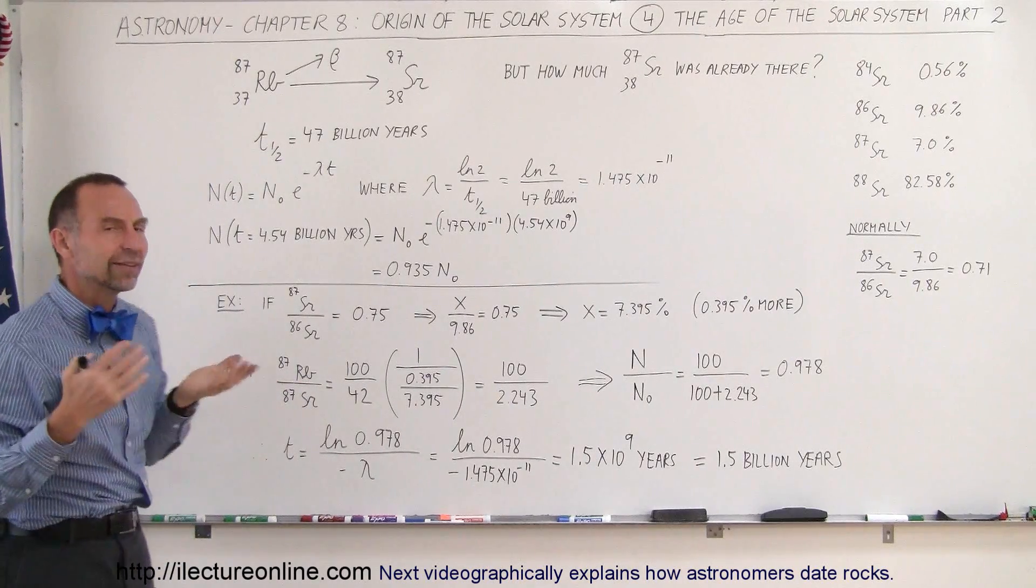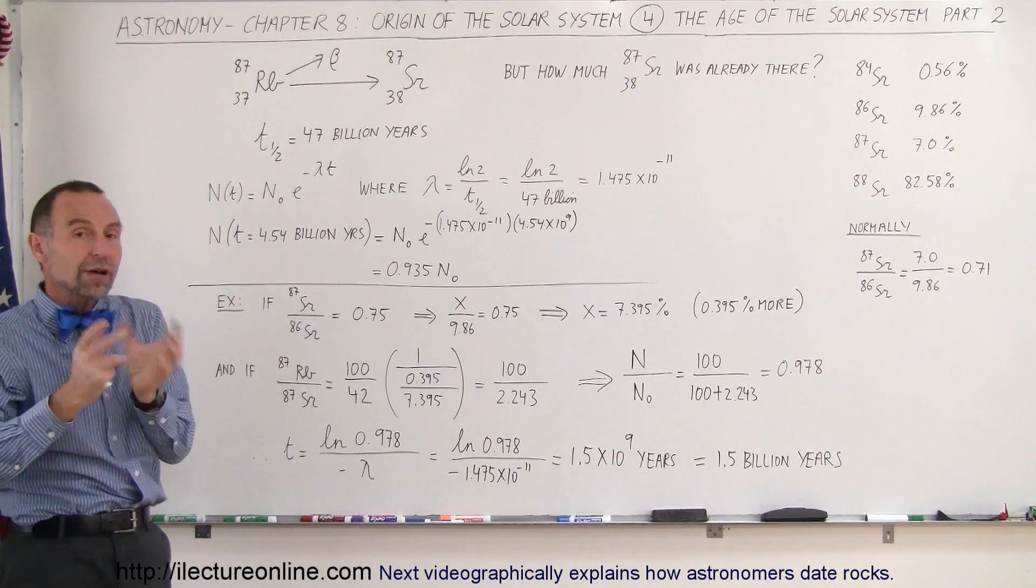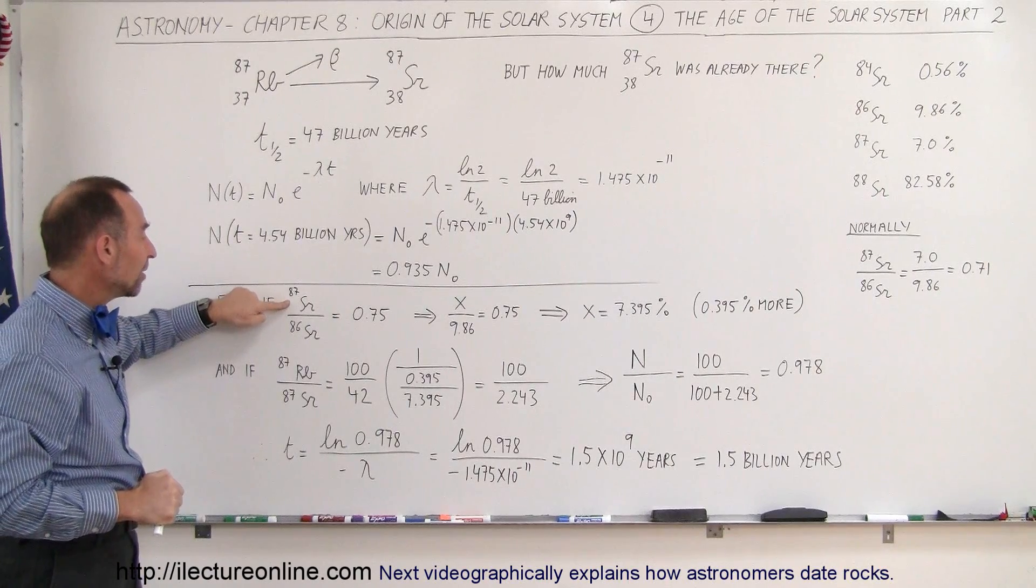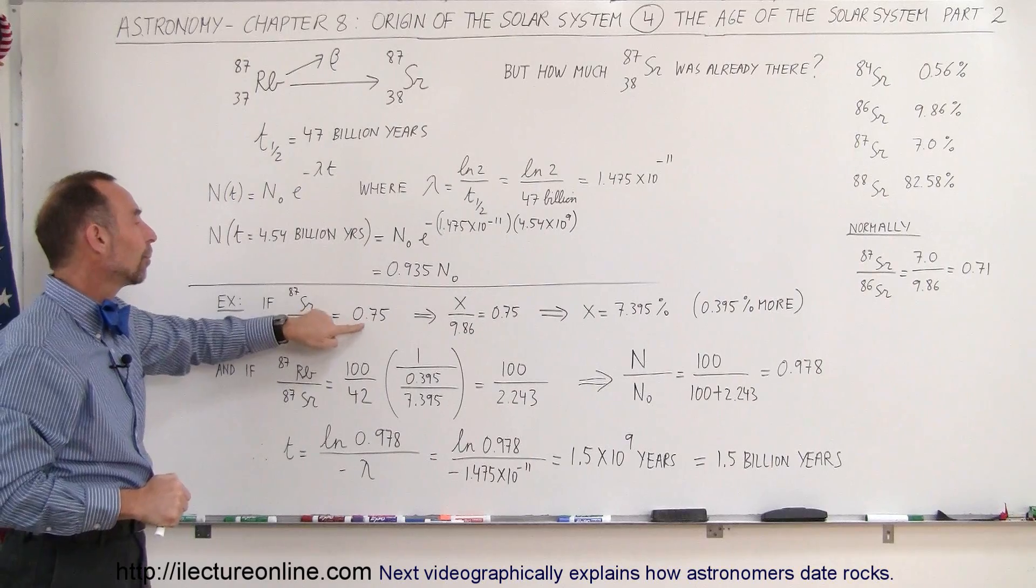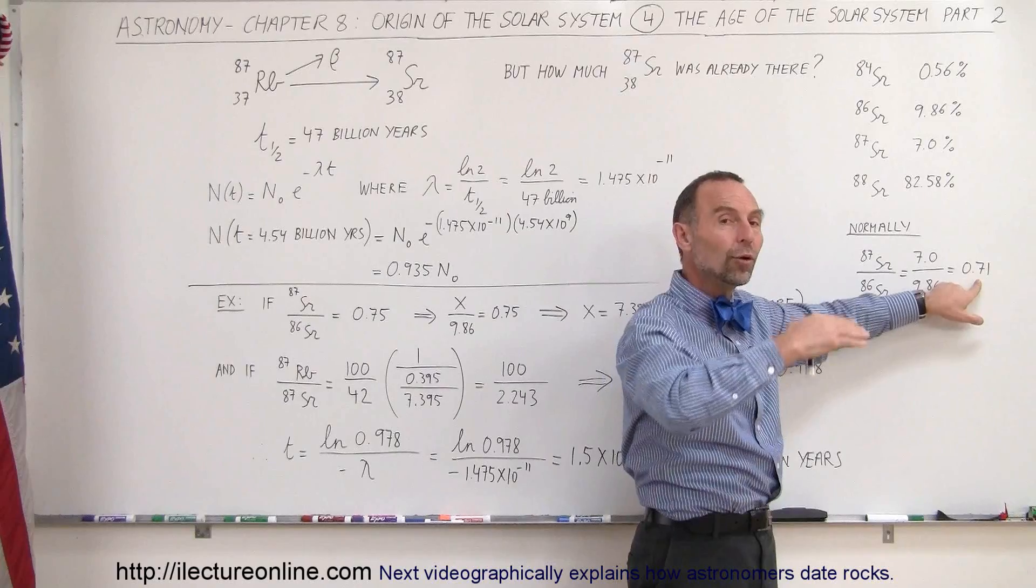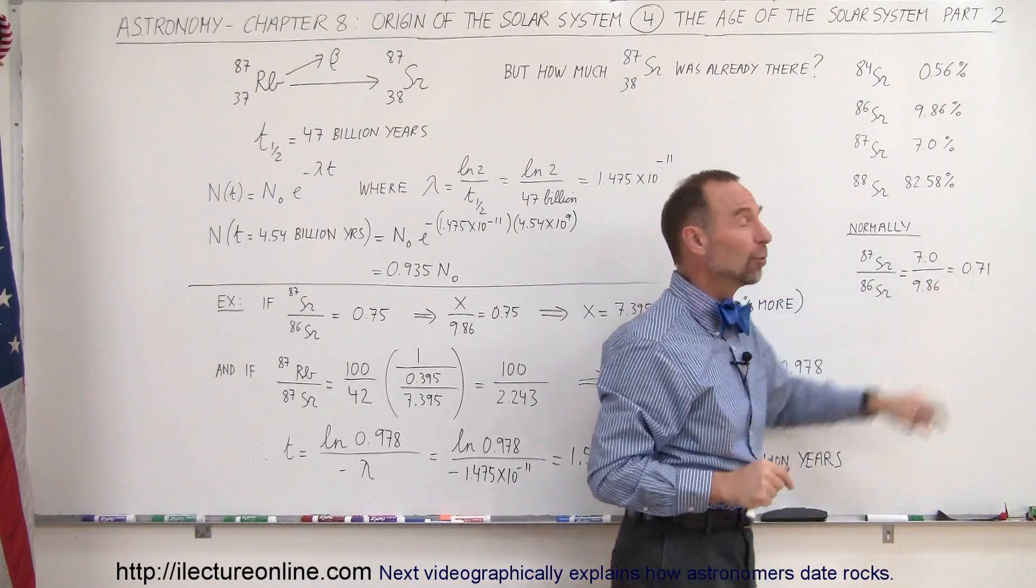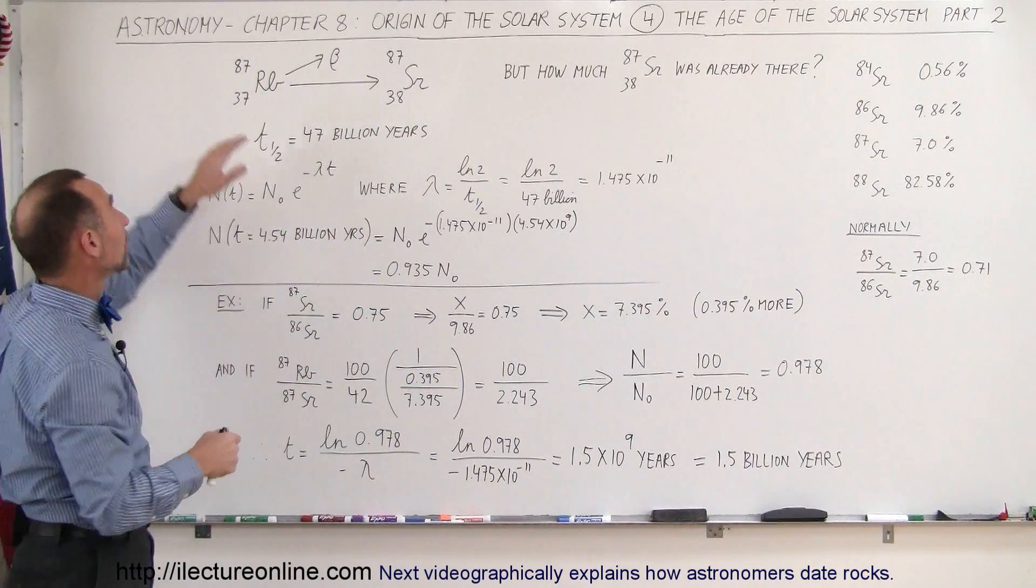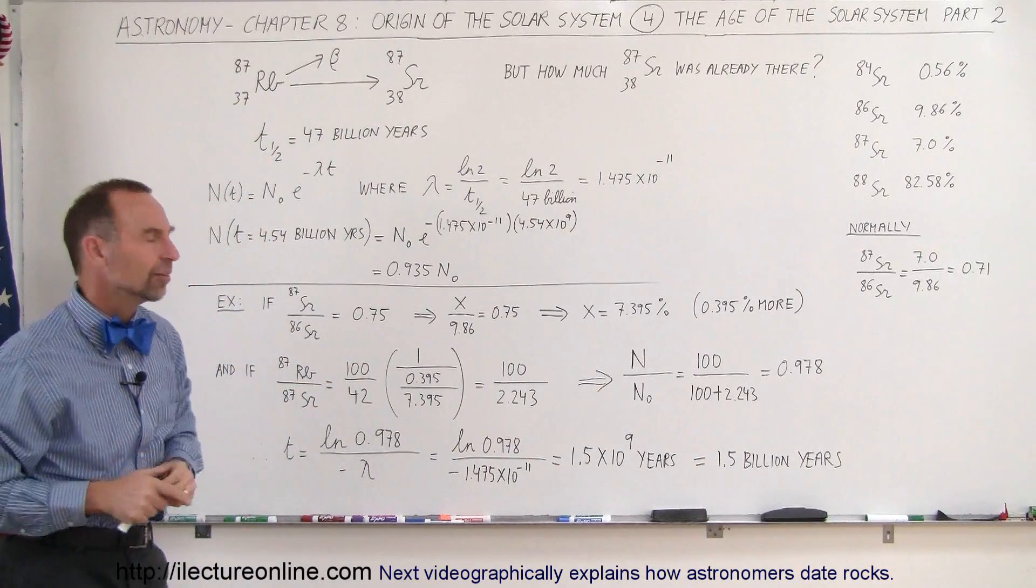So now let's do an example. Let's say we find a rock, we analyze it, and we do two measurements. The first measurement is we do a ratio measurement between Strontium-87 and Strontium-86, and let's say that that ratio is equal to 0.75. Remember, when we go back, the ratio that we expect if there was no Rubidium present, we would expect the ratio to be 0.71. The fact that it's 0.75 means that we know that some of the Rubidium has decayed into Strontium-87, therefore there's an excess of Strontium-87.